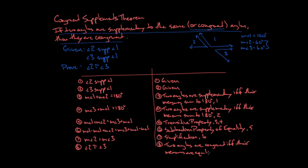Now that we've finished this proof, the great thing is I can use this theorem to save time going forward. Instead of having to go through all eight steps to prove two angles supplementary to the same angle are congruent, I can just invoke the Congruent Supplements Theorem directly. That eliminates five steps I won't have to show next time, all because I proved this theorem once — and now I can use it whenever I want.